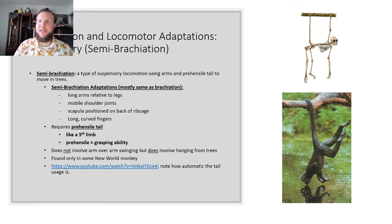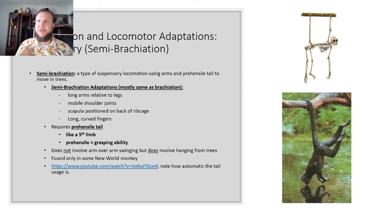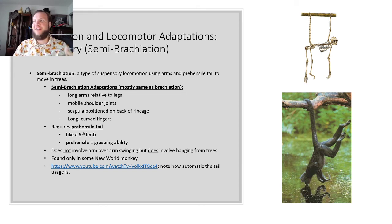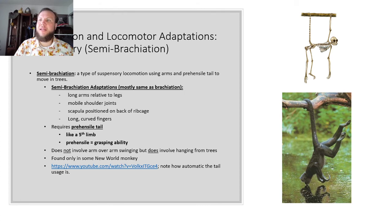Next is suspensory semi-brachiation. Semi-brachiation uses arms and a prehensile tail. They have long arms relative to legs, mobile shoulder joints, scapula positioned on the back of the rib cage, and long curved fingers. The only difference from brachiators is the prehensile tail, as seen with the spider monkey hanging using its tail only. This allows grasping of tree limbs to suspend themselves. It doesn't involve arm-over-arm swinging but a lot of hanging from trees, and this is only found in New World monkeys.